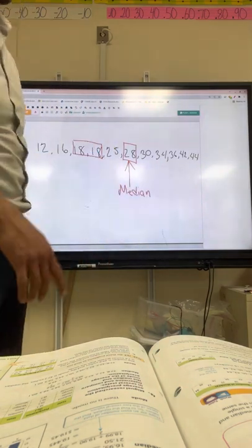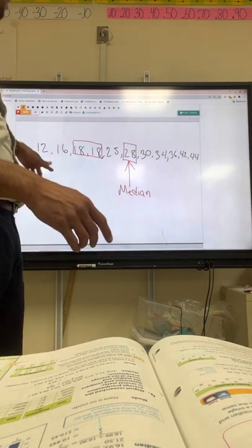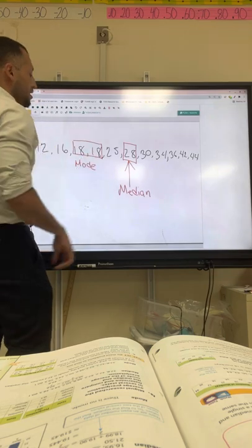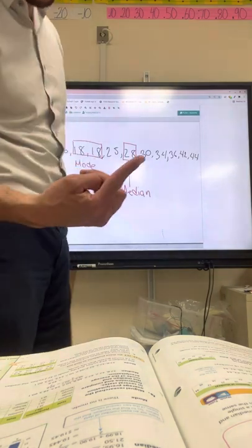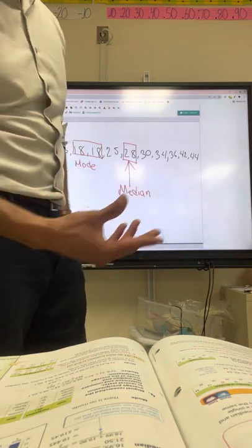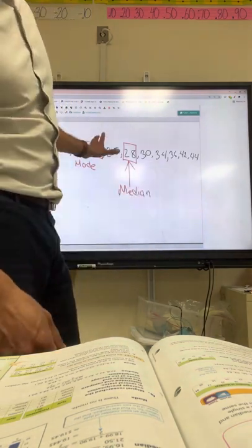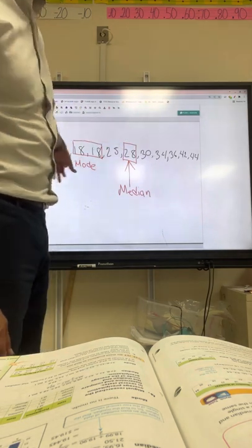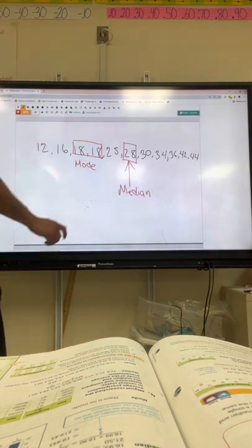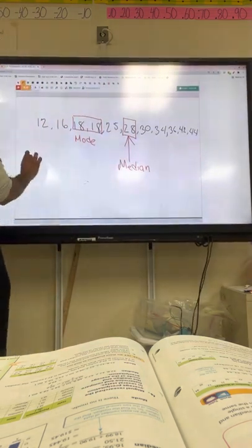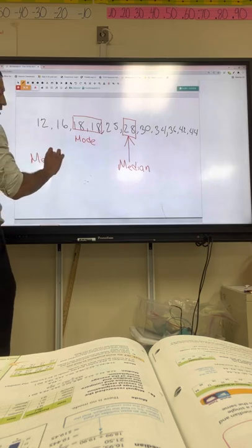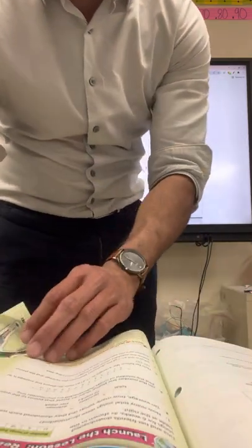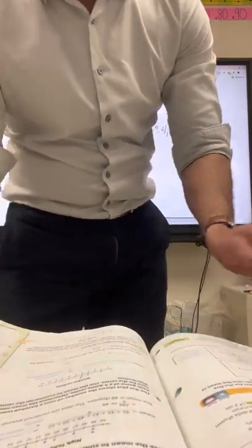Now one more thing — the mode. That's the number that repeats more than once, maybe twice, maybe three times — it's the number that appears the most on that number line. Now, how do I get the mean? I want you guys to also work on this one, and that's going to be on page 783 and 784.